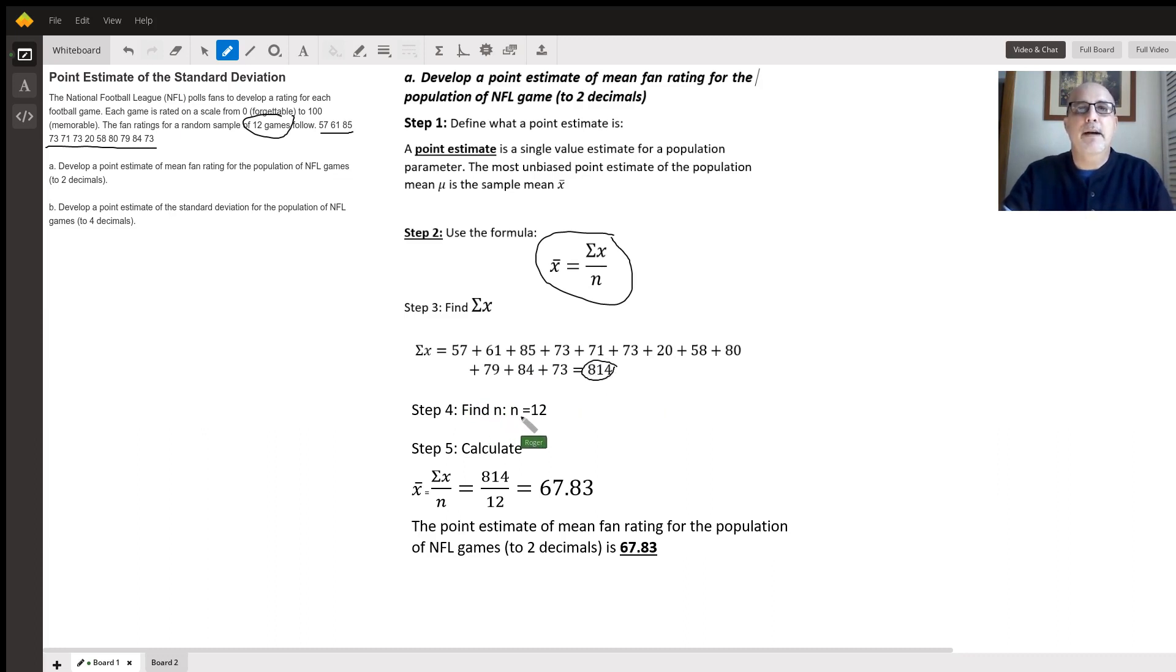Step four, find n. Well, n was given, it was 12 games. Step five, we're going to calculate x-bar. X-bar is the sum of x over n, which is 814 over 12, which we calculate as 67.83. The point estimate of the mean fan rating for the population of NFL games to two decimal places is 67.83. That's the answer to Part A.